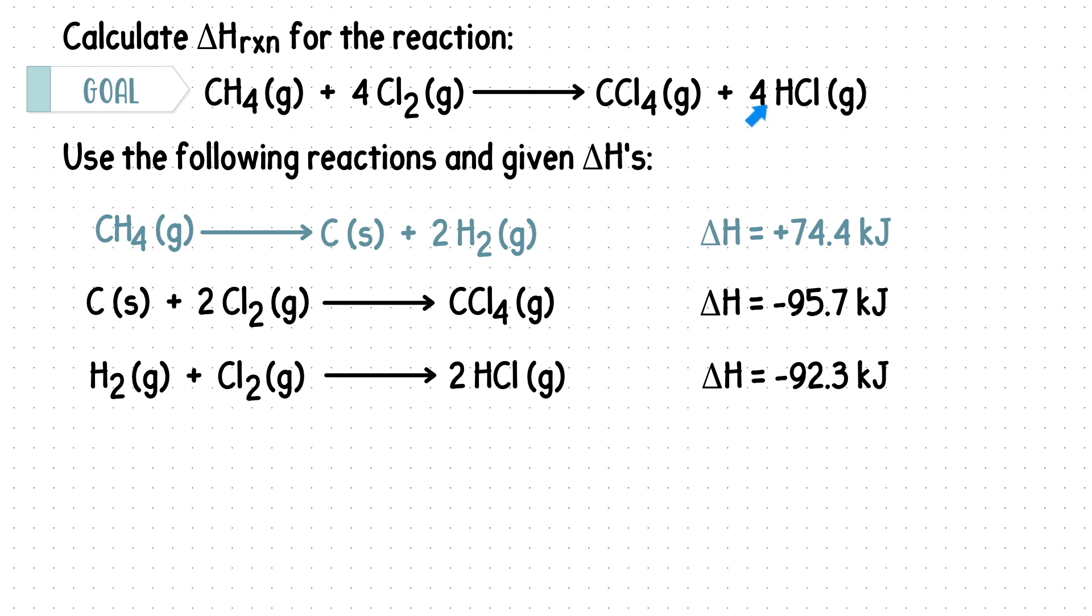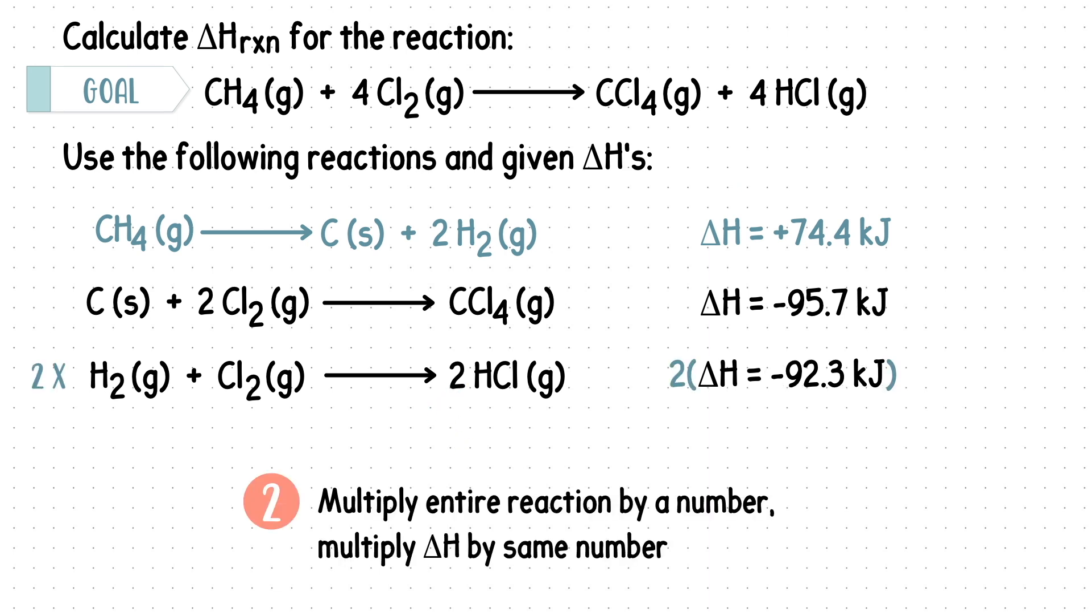The goal is to have 4 HCls, we only have 2 here. So we will use rule 2 and multiply the entire reaction by 2 and multiply the change in enthalpy by 2.